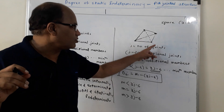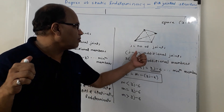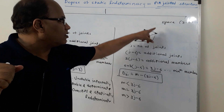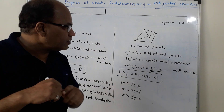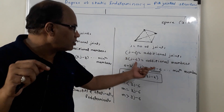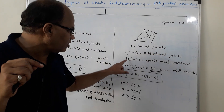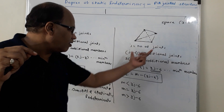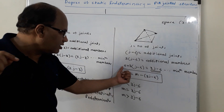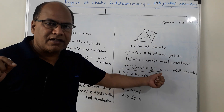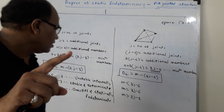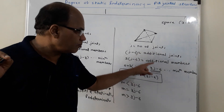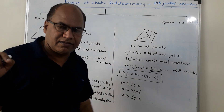If j is the number of joints, the additional number of joints will be equal to j minus 4, because 4 are the initial joints. In order to connect each additional joint to the initial elementary structure, three members are required. So, the total additional members becomes 3(j − 4). Adding the initial six members: 6 + 3(j − 4) = 3j − 6. So, the minimum members in case of a plain pin-jointed structure is 2j − 3, whereas the minimum number of members in case of a 3D pin-jointed structure is 3j − 6.